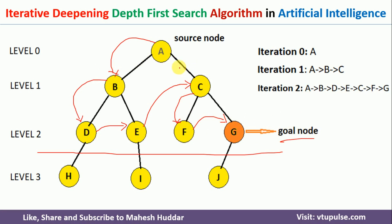So in this algorithm, we start with level 0 and search for the goal node. If found, that's good; otherwise we increase the level and try again. We keep increasing the level unless and until we find the goal node. This is how the Iterative Deepening Depth-First Search Algorithm works.